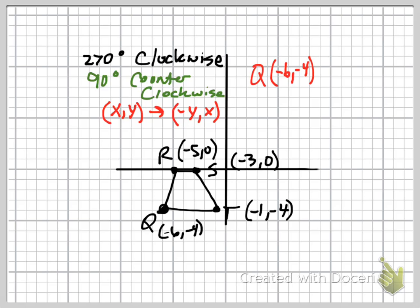Point q is at negative 6, negative 4. According to the formula, I need y and x to switch places. Notice how this time, instead of negative 4, it becomes positive 4. The 6 doesn't change this time, but the y changes. It was negative 4, and now it becomes positive 4. My new coordinate is 4, negative 6.